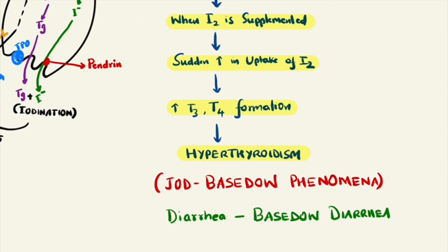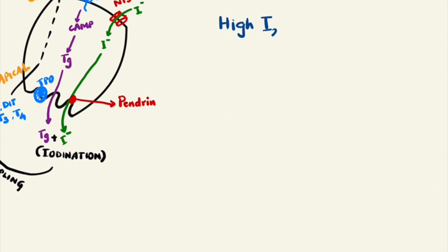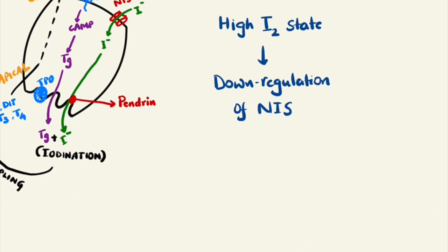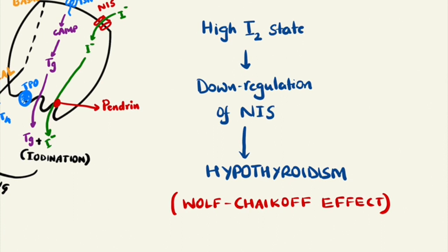On the other end, when there is a high iodine state in the body, there is downregulation of sodium iodide symporter. The follicular cell is very saturated with iodine and tells the sodium iodide symporter to come inside — there is enough iodine and no more should be brought in. So there is downregulation of sodium iodide symporter, which results in hypothyroidism. This is known as the Wolff-Chaikoff Effect. To revise: when there is a high iodine state in the body, there is downregulation of the sodium iodide symporter, resulting in hypothyroidism.